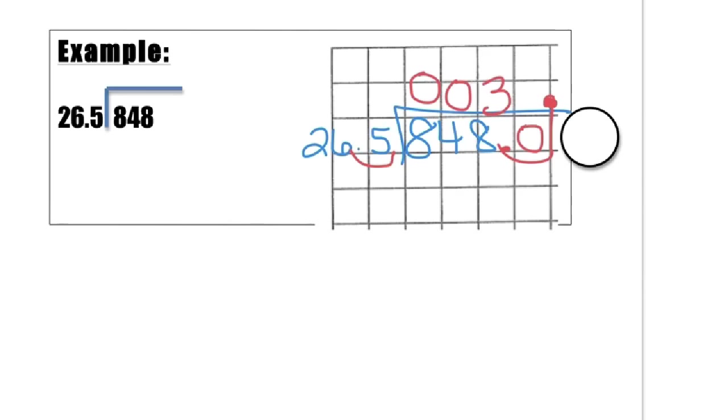We will place a 3 on top of the 8 and multiply 3 times 26.5. But 3 times 26.5 or 265 would be 795. When we subtract 8 minus 5 is 3, we must borrow here. 14 minus 9 is 5 and 7 minus 7 is 0.